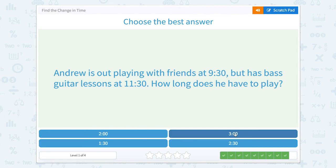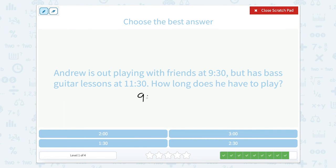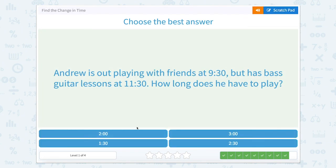Andrew is playing with his friends at 9:30 but has bass guitar lessons at 11:30. How long does he have to play? I think I remember seeing these exact numbers in that last problem, 9:30 to 11:30. We can look at it this way as 9:30 plus one hour gets us to 10:30. And then if we're at 10:30 and we need to add an hour, what time does that get us to? 10:30 plus one hour gets us to 11:30. So how many hours did we add? Let's look here. We added one hour and one hour. So one hour plus one hour is two hours.